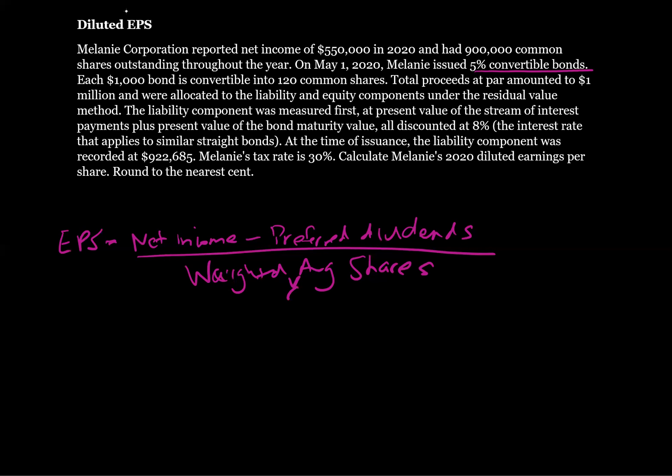The EPS calculation is net income minus preferred dividends divided by the weighted average common shares. When we have diluted earnings per share, we're going to need to adjust for net income. The diluted earnings per share are going to be calculated using the what-if method, assuming that these convertible bonds are converted into the common shares.